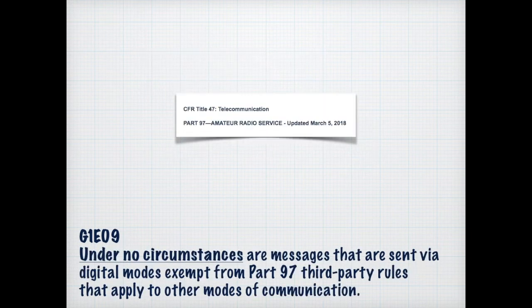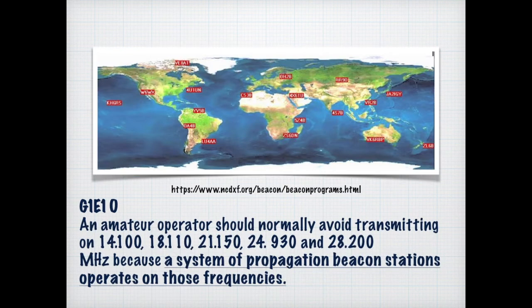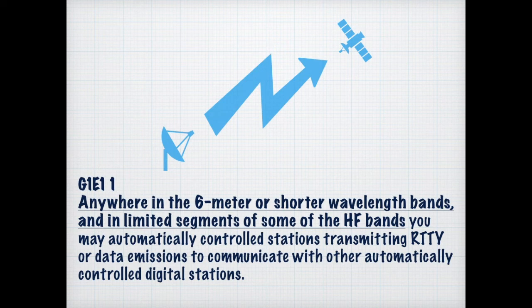Digital modes apply to the same rules as the rest of our communications in that they can't be encrypted or hidden by different codes. As responsible amateur radio operators, we should avoid transmitting on the frequencies that beacon stations use. The beacons are there so that we can assess the propagation on a given day, and transmitting on those frequencies defeats the purpose. Typically, frequencies above six meters give us latitude, and we're able to automatically control stations in the distance transmitting RTTY or data emissions.